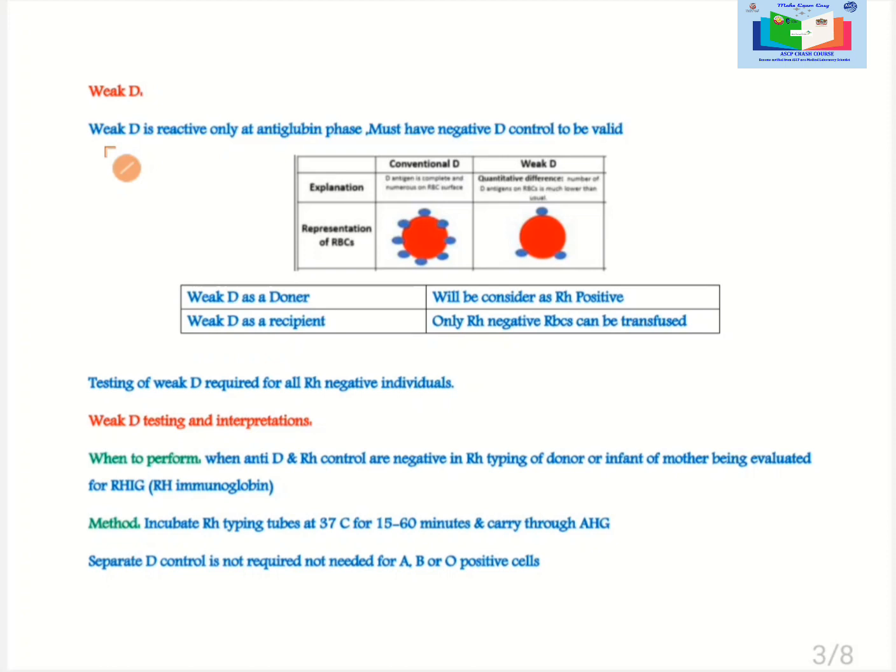Weak D: Weak D is reactive only at antiglobulin phase. For validation there must be a negative control parallel run. As in this picture you are noticing that there are fewer D antigens on weak D, as compared to the conventional D which expresses sufficient D antigen. This low number of D antigen on weak D RBC makes them unable to form a lattice formation. That is why we use anti-human globulin phase testing.